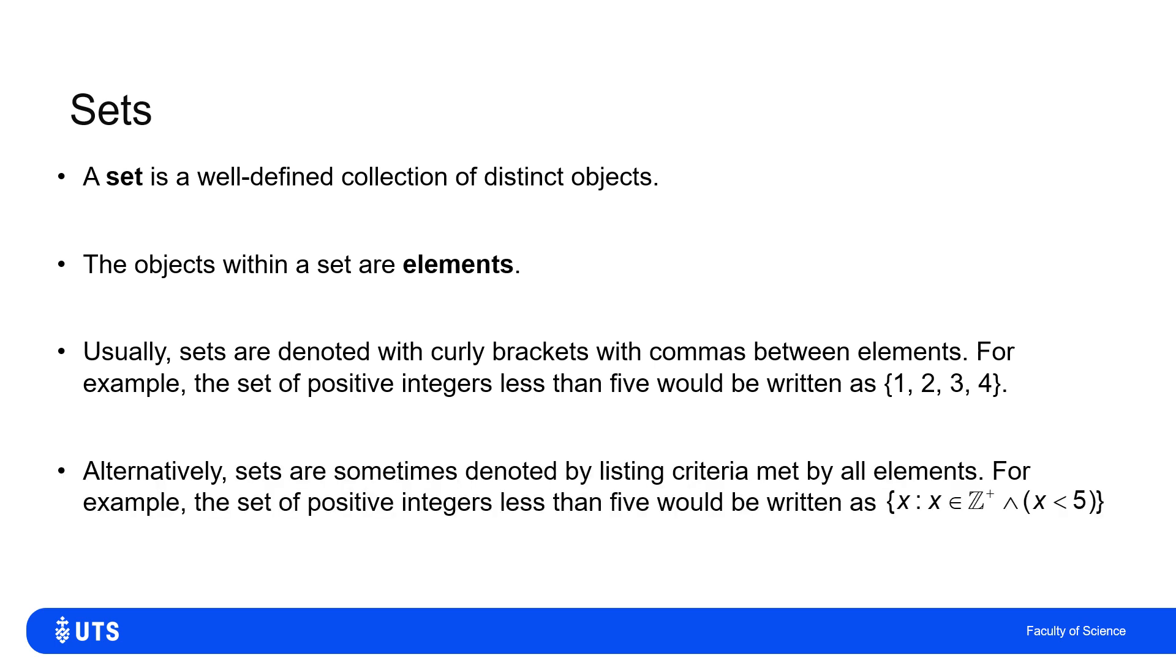We do have other ways of writing a set, which is not necessarily listing every element. And this is particularly true for very large sets. But if I look at how I've written it there, I have the set containing all possible x such that x belongs to Z+. That tells me all of the values in the set are positive integers. And x is less than five.